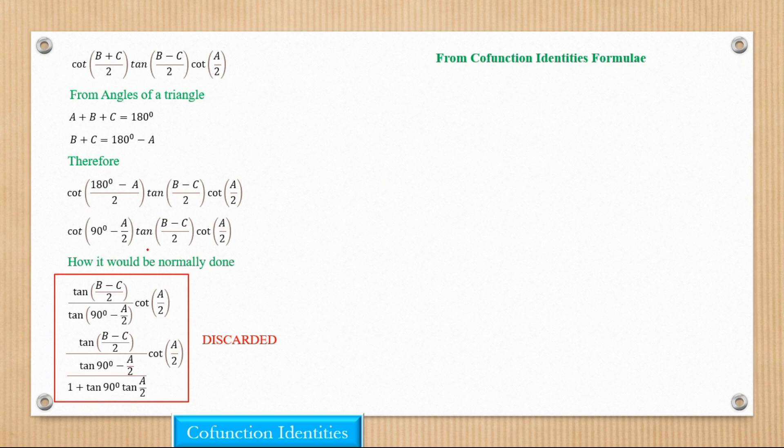Now, what will happen is we're going to look for the cofunction identity that represents a cot. So we're going to find a cot because we want this to easily cancel with the value that we actually have here.